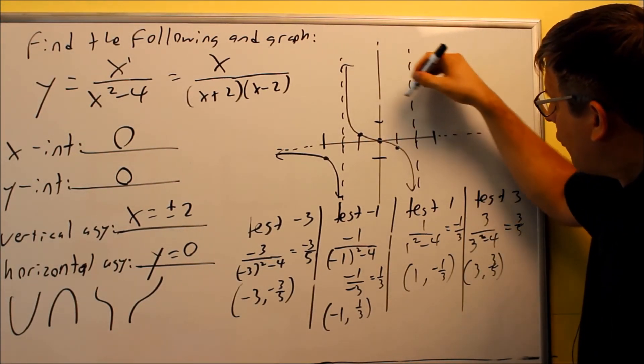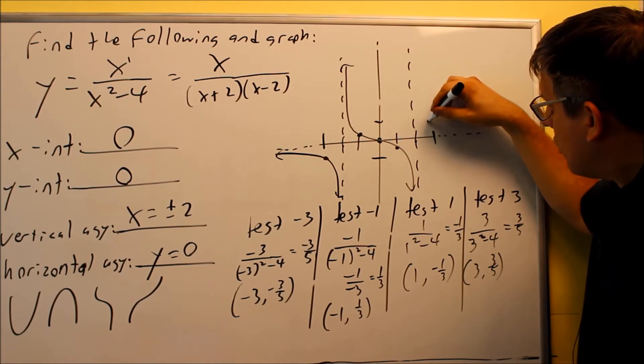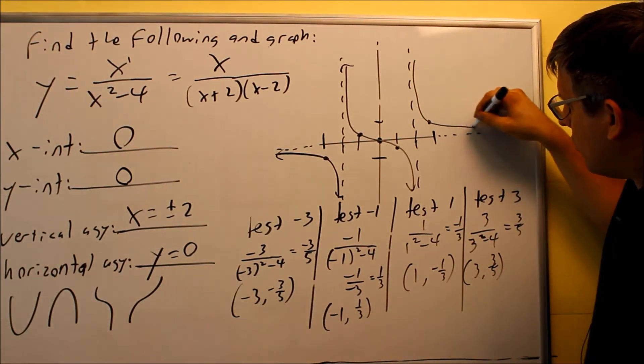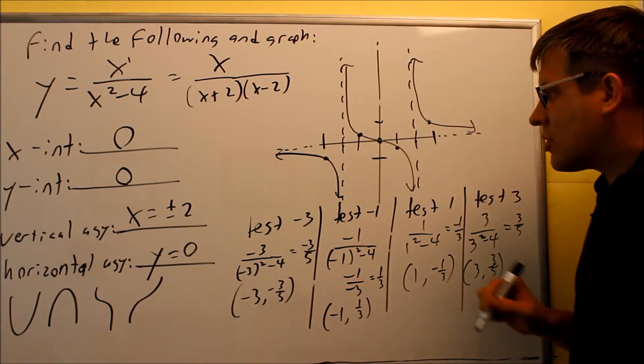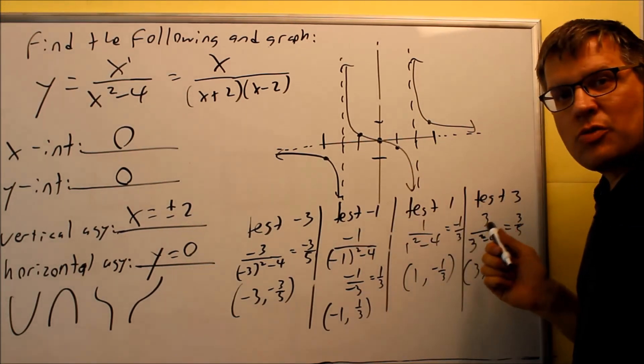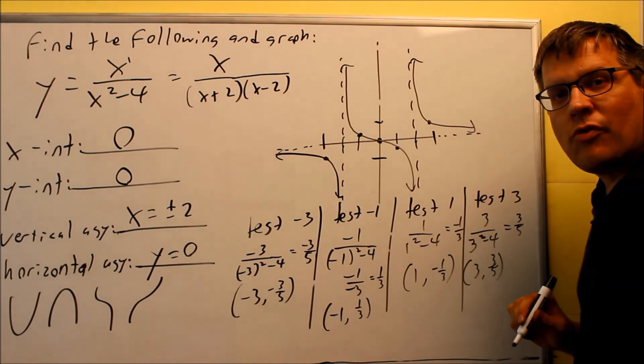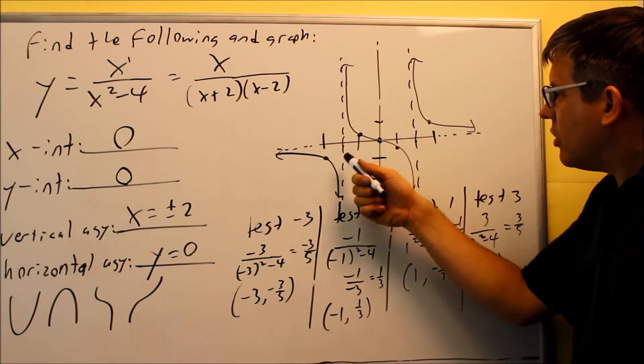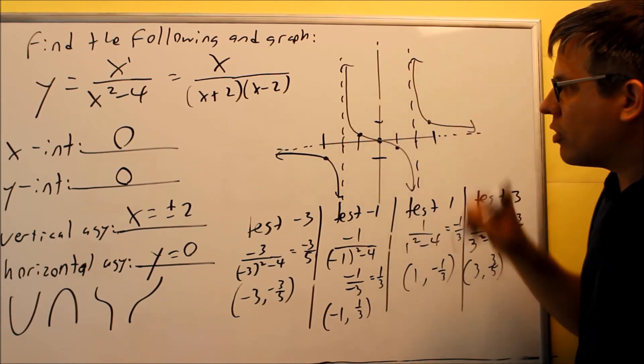So over 3 and up 3 fifths would be about right here. And that tells us that the graph itself is going to be drawn above like that. So again, this one, we had to do a lot of test points because initially the graph that was provided didn't give us enough information. So we had to do these four test points to determine the overall shape of the graph.